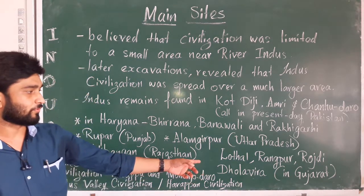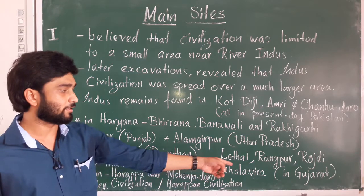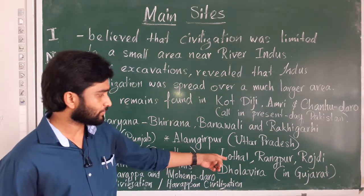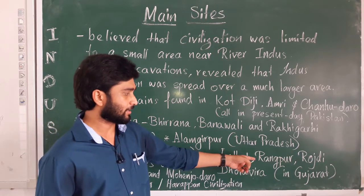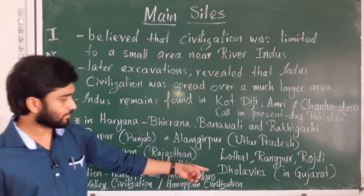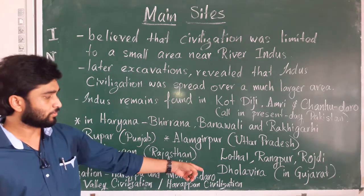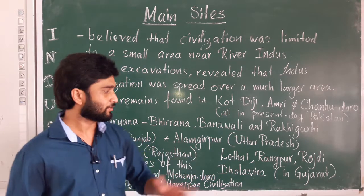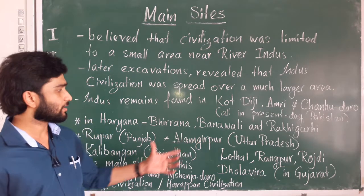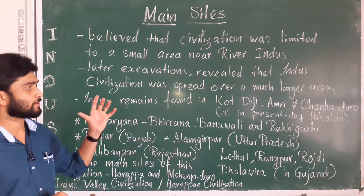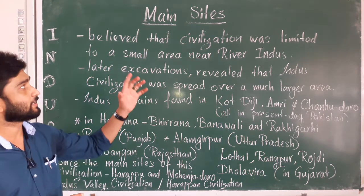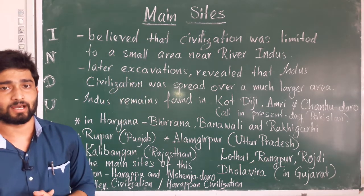There are also four sites in Kutch. They are Lothal, Rangpur, Rojdi, and Dholavira. These are the few sites that can be found associated with the Indus civilization.